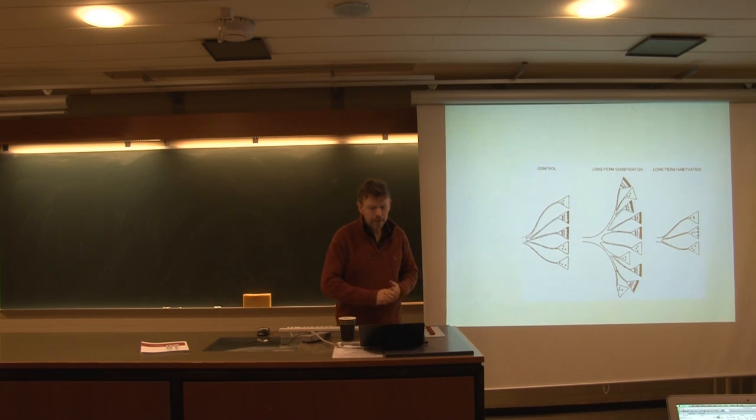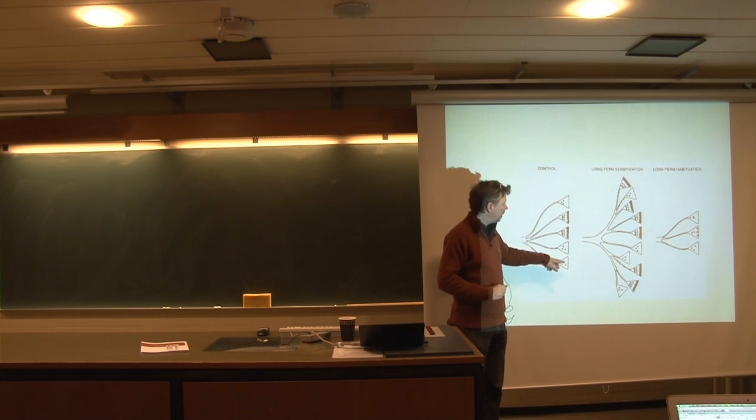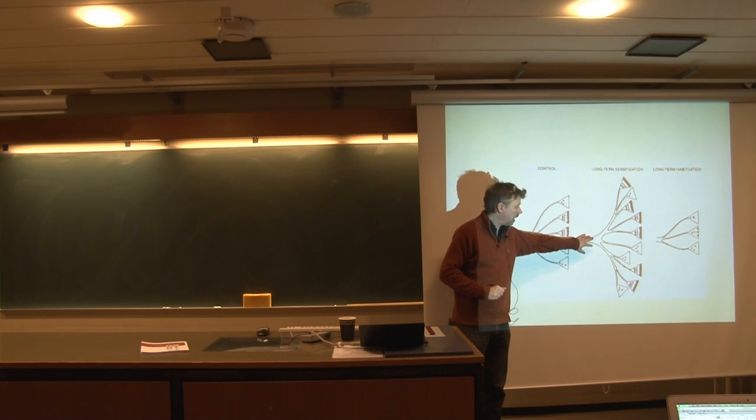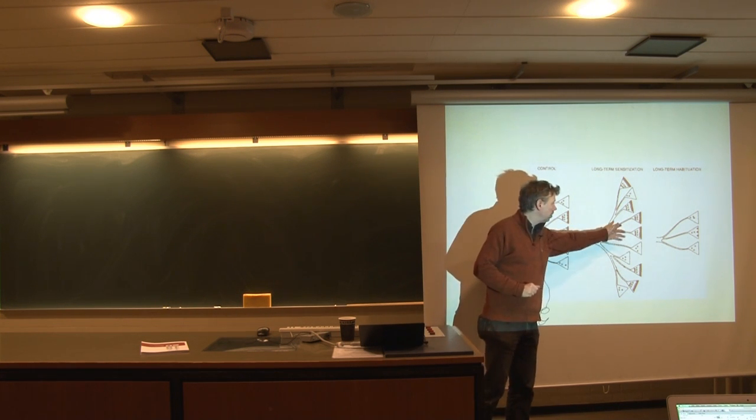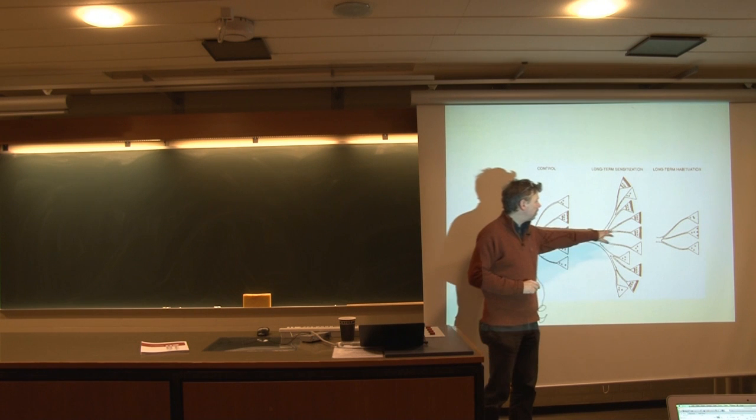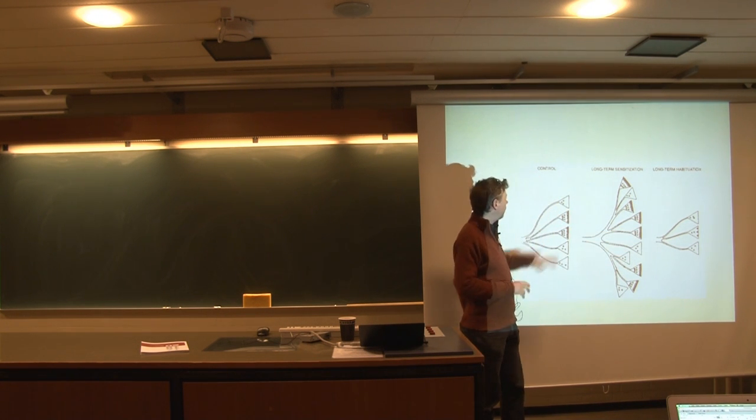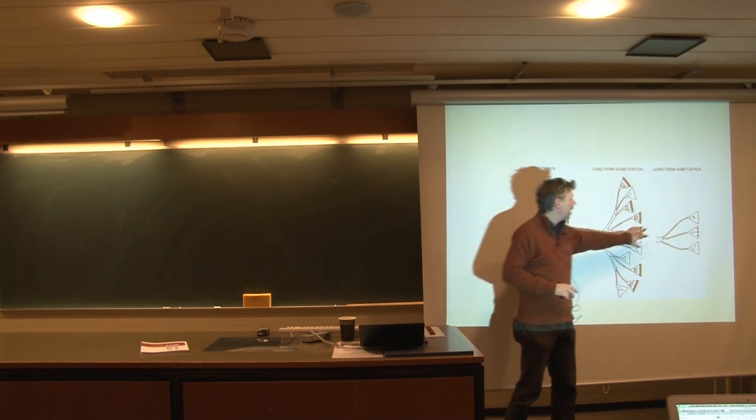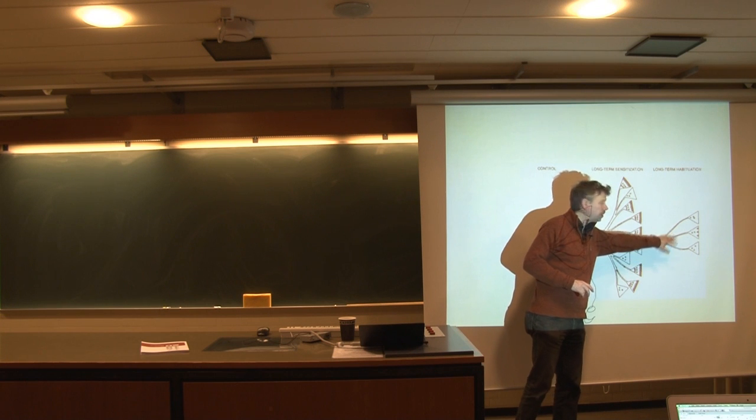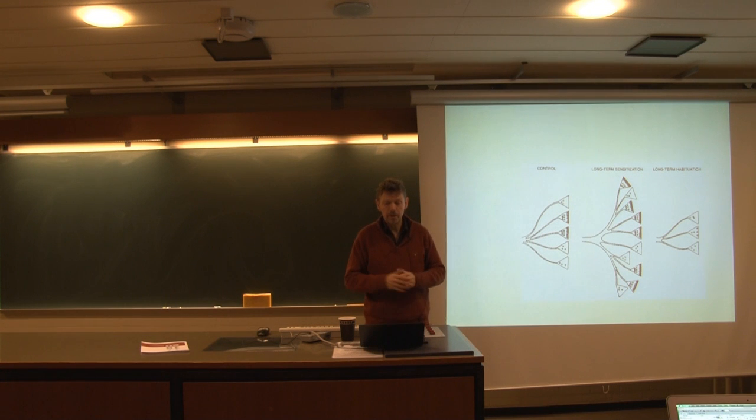That also means that what you see at the long term is that you get more synapses, so you have actual outgrowth of new connections, new synapses being made, and more of those synapses will have much more neurotransmitters available. So you have control situation, long-term sensitization with much more connections, and you have long-term habituation, less synapses, and synapses with less neurotransmitters inside of them.